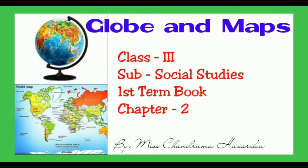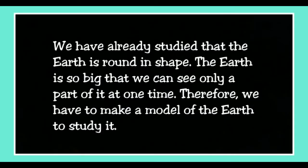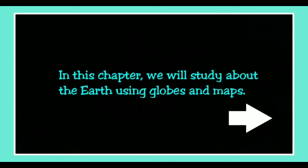Hello, my dear students. Today in this video I am going to explain about Class 3 Social Studies, first term book, Chapter 2: Globe and Maps. First of all, we have already studied that the Earth is round in shape. The Earth is so big that we can see only a part of it at one time. Therefore, we have to make a model of the Earth to study it. In this chapter we will study about the Earth using globes and maps.